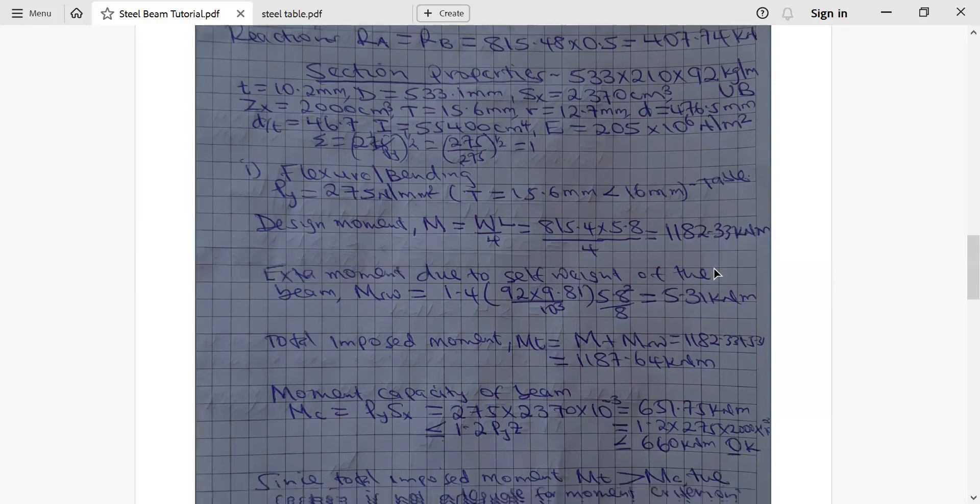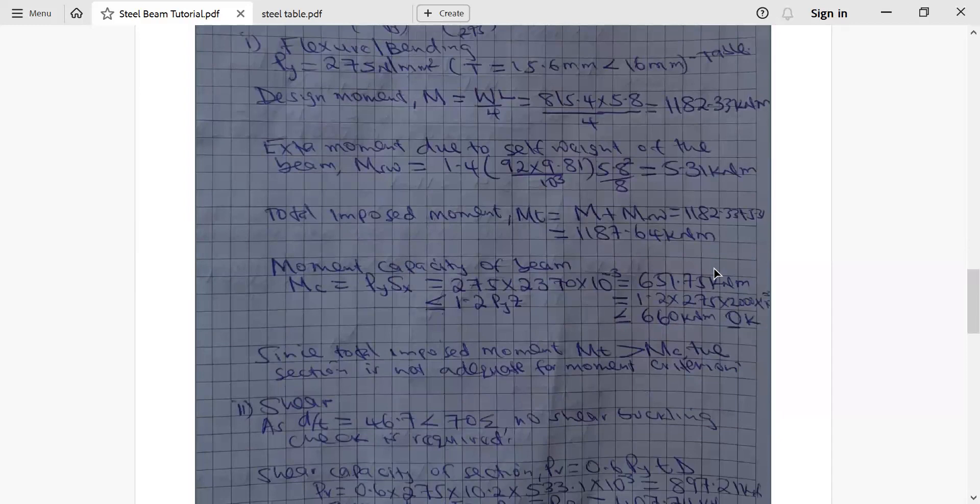Then from there, we go moment capacity of beam. Moment capacity of beam is given by strength multiplied by the plastic modulus along XX. This plastic modulus along XX, you read it from the table I've shown you, which is 275 multiplied by 2370. Now this times 10 power negative 3 is to ensure the value we get is in terms of kilonewton meter. 10 power 3 is just a conversion of all these units because 275 is Newton per millimeter squared. And then 2370 is 10 power 3 cubic meter. Now this 10 power 3 is just a factor to take care and end up with kilonewton meter. So we get the moment capacity is 651.75 kilonewton meter.